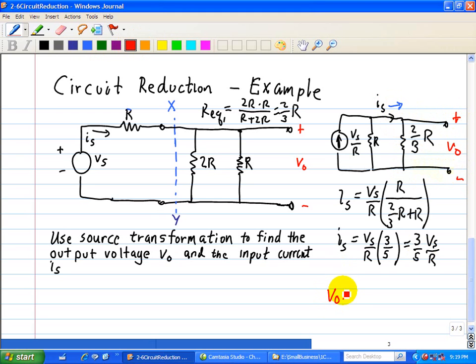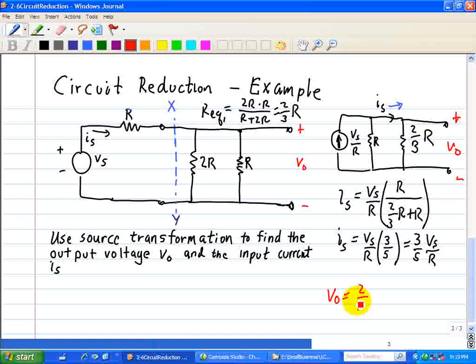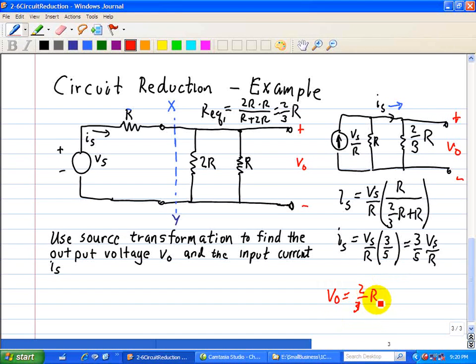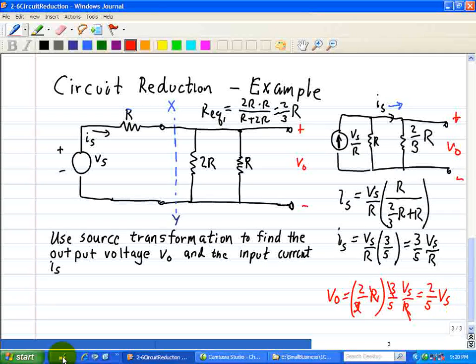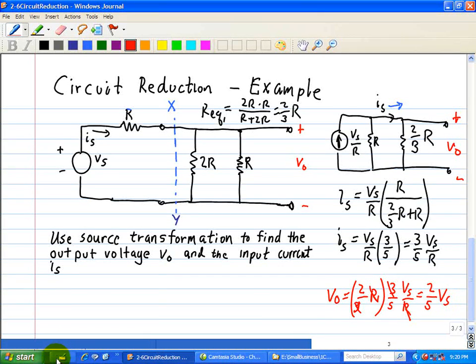So V0 is just using Ohm's Law, we have two-thirds R times IS, which is three-fifths Vs divided by R. The R's cancel, the threes cancel, and we're left with two-fifths Vs. That's our final answer.